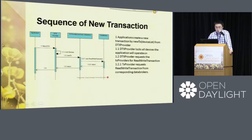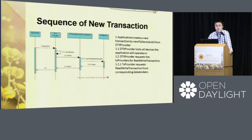After step 1.3, suppose there's an error — for example, DTX provider fails to get a transaction from a specific provider. In that case the creation of the new transaction fails, and the DTX provider will release all the devices, release all the locks, and return an error to the application.